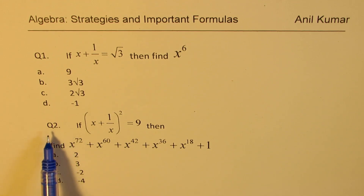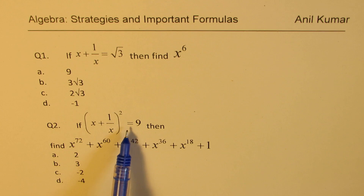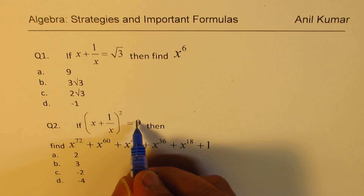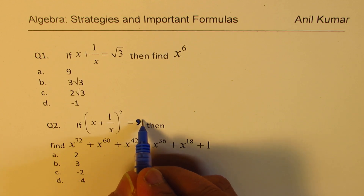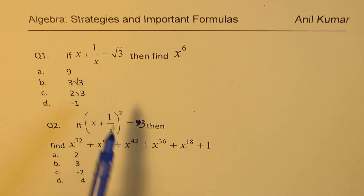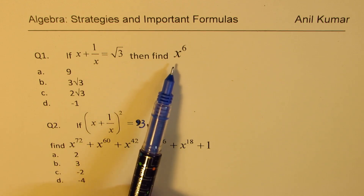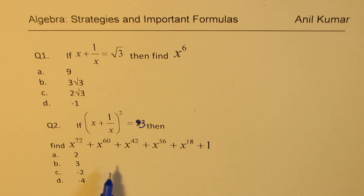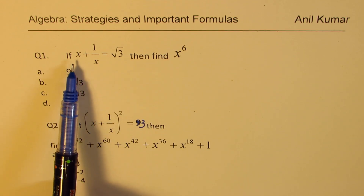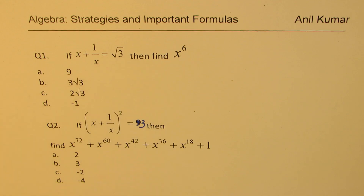You will notice that in question number two, x plus one over x is really equal to square root of three. If you take the square root, what you get is — sorry, this number should have been three, so let me rewrite this. So x plus one over x will be square root of three. So it is kind of related. If you know the answer of question number one, that result could be used in question number two to solve. Now let us see how to find the value of x to the power of six when we are given x plus one over x equals square root of three.